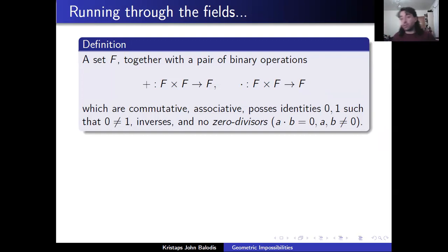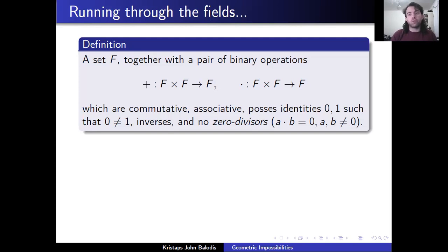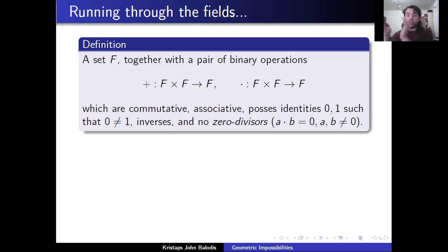Recall that the definition of a field says that a set F together with a pair of binary operations — addition and multiplication, as we call them — where the operations are commutative, so it shouldn't matter which order we perform the operations, and associative, meaning we can simply move parentheses around in these operations. It also has to possess identities 0 and 1.